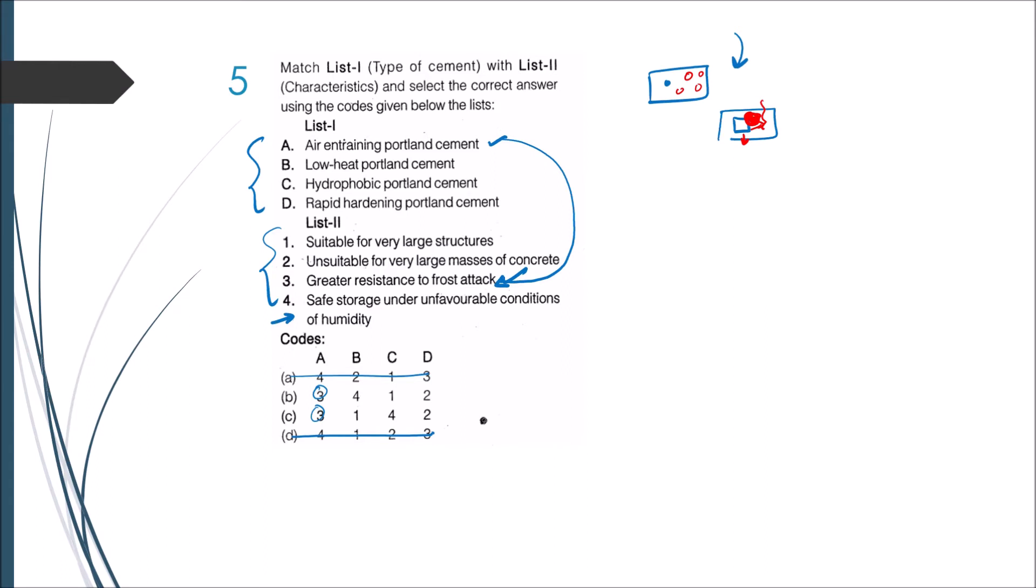For the next one, let us look at the application and then come to the type of cement. Let me come to this application: safe storage under unfavorable conditions of humidity. What does this mean? I have my cement bags and these cement bags are placed or stored in a place where there is high amount of humidity. Humidity means high moisture content present in the atmosphere. Safe storage under unfavorable conditions means this cement should not react with this water content present in the atmosphere.